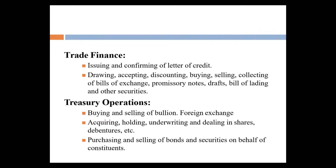Treasury operations include buying and selling of bullion. You know that demat accounts are opened when you operate in terms of shares and securities in the share market or open market operations. You can buy gold, silver, and foreign exchange legally. Banks also handle acquiring, holding, and underwriting of shares and debentures, and purchasing and selling of bond securities on behalf of constituents.